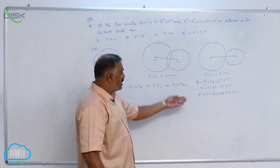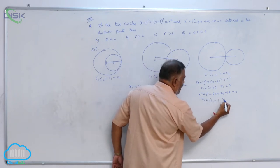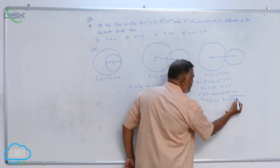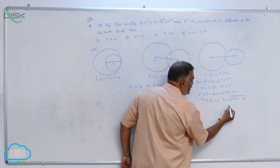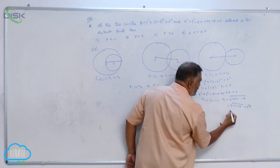Center C2 is (4, -1), and R2 equals the square root of 16 plus 1 minus 8. This is the square root of 17 minus 8, which is root 9, that equals 3.